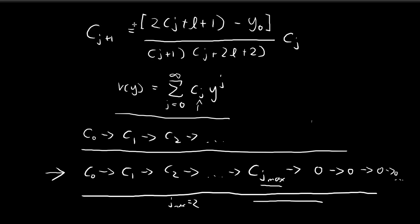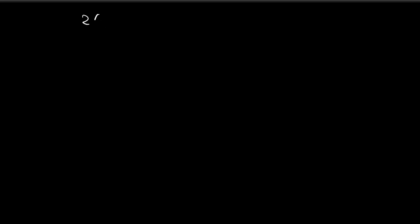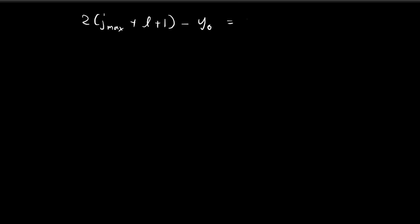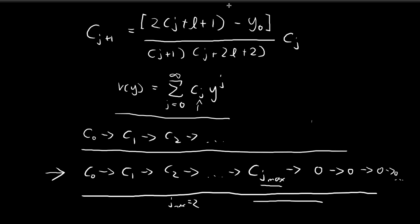This implies the numerator must be equal to zero. When we reach j_max, the numerator is equal to 2(j_max + l + 1) minus y₀, and in order for the chain of coefficients to stop, this must equal zero. Note that j_max is just an index, so it must be an integer.